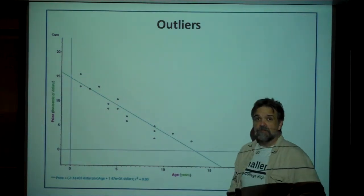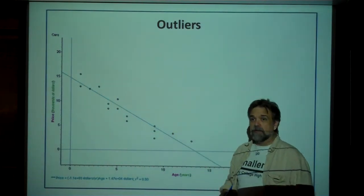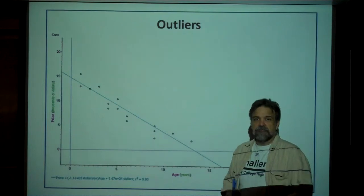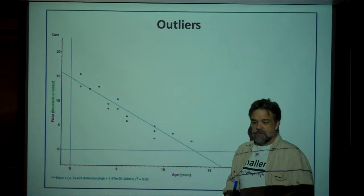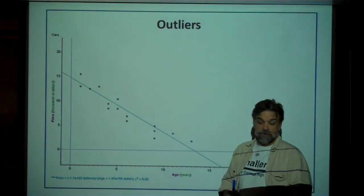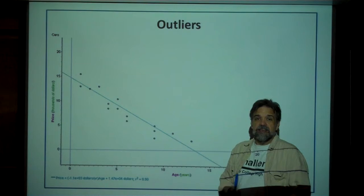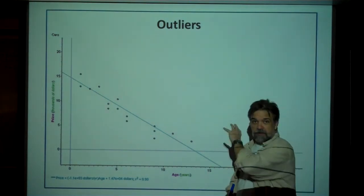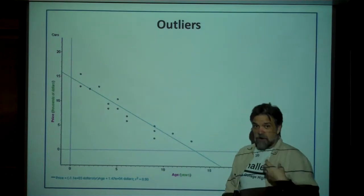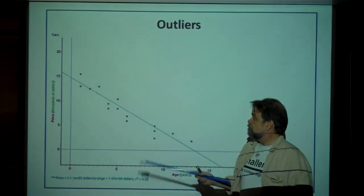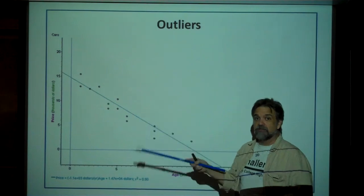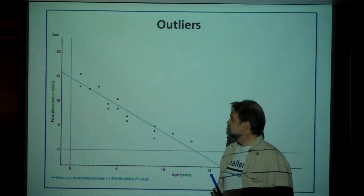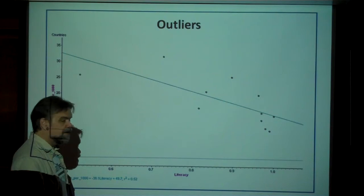When you have weird points like that, you throw them out and rerun your regression to see how much things changed. Maybe they didn't change that much. When you publish your results, you can publish with the outlier and without the outlier and show that either way you can make your point. Remember, we're using this data to probably bolster an argument — and if we can make a point either with or without that extra data point, good.